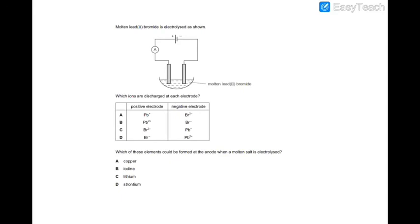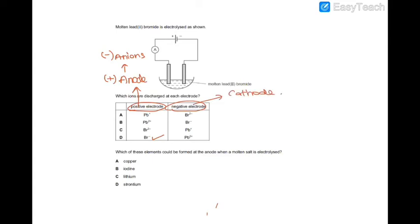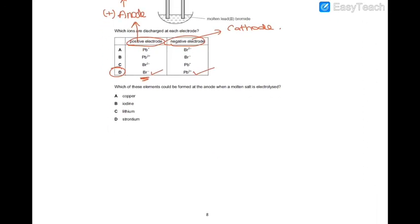The next question asks about ions discharged at the positive electrode. The positive electrode is the anode, which attracts anions — negative ions. So at the anode you're going to have Br⁻, and at the cathode you will have the cations, Pb²⁺. Br⁻ exists as bromide ions. Finally, which element could be formed at the anode when a molten salt is electrolyzed? At the anode you have the non-metal, so not copper, not lithium, not strontium — the answer is iodine.